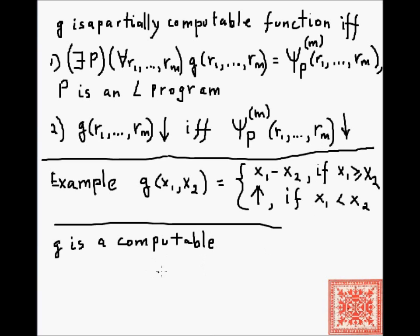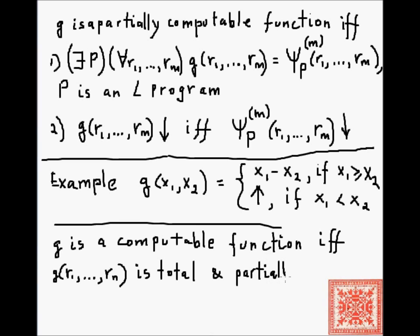When is g a computable function? g is a computable function if and only if g of r1 through Rn, assuming that g of R1 through Rn is total, so that's the first requirement, and partially computable. We have to show, to prove that g is a computable function, we have to show that it is a total function and also that it is partially computable.